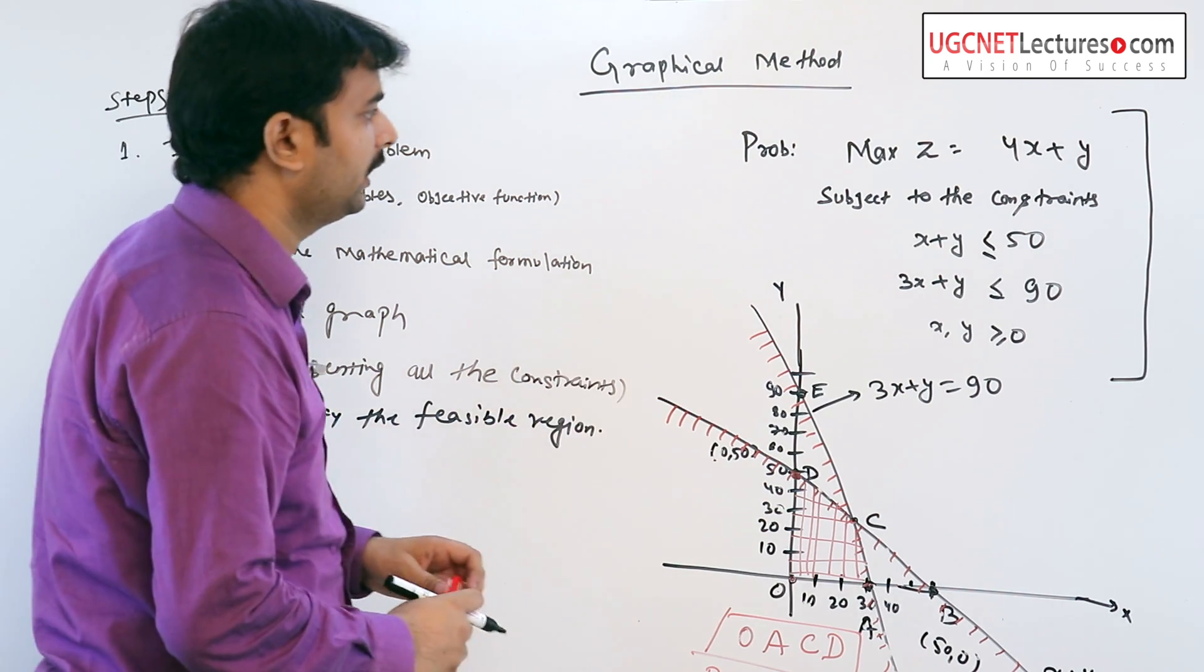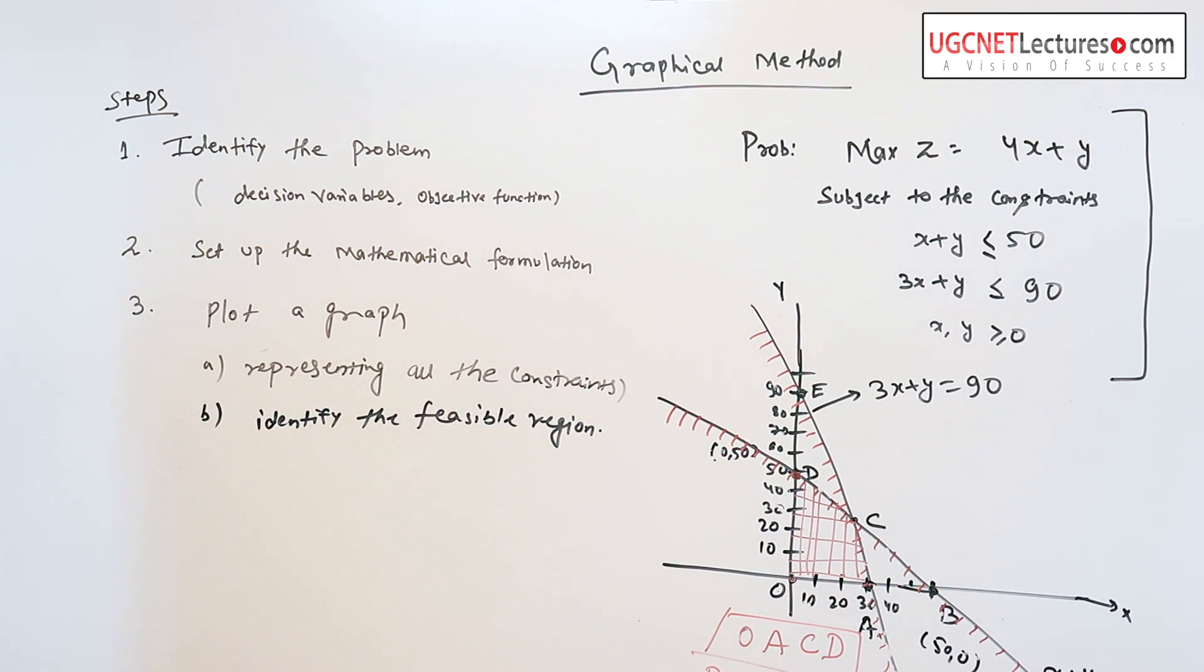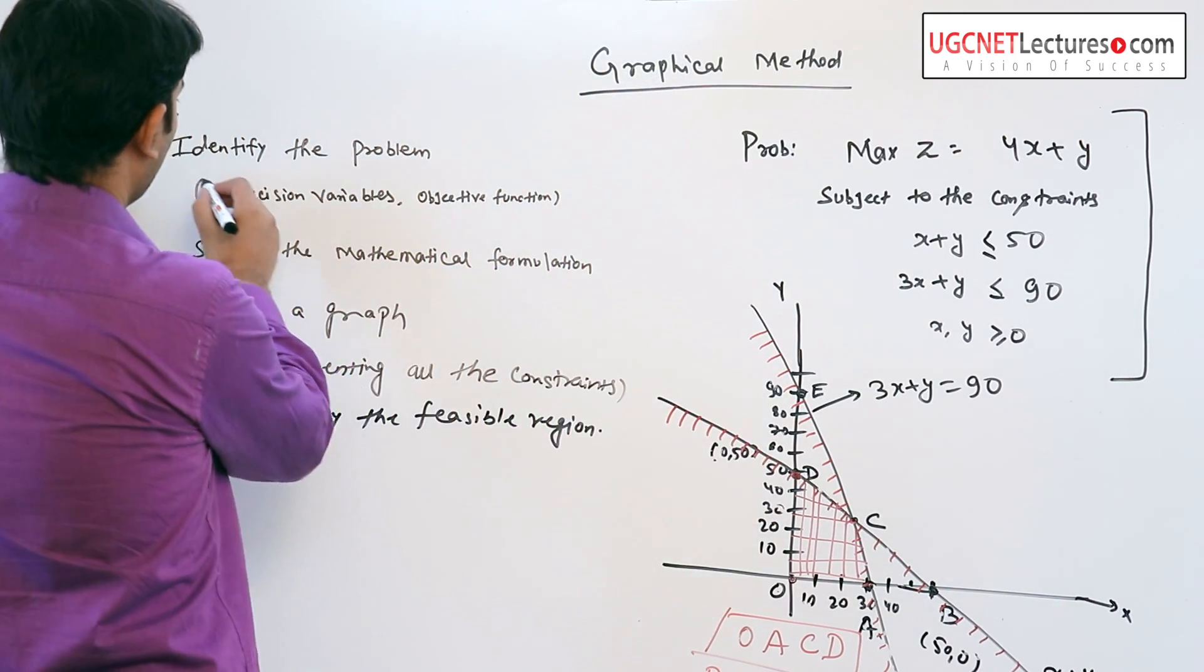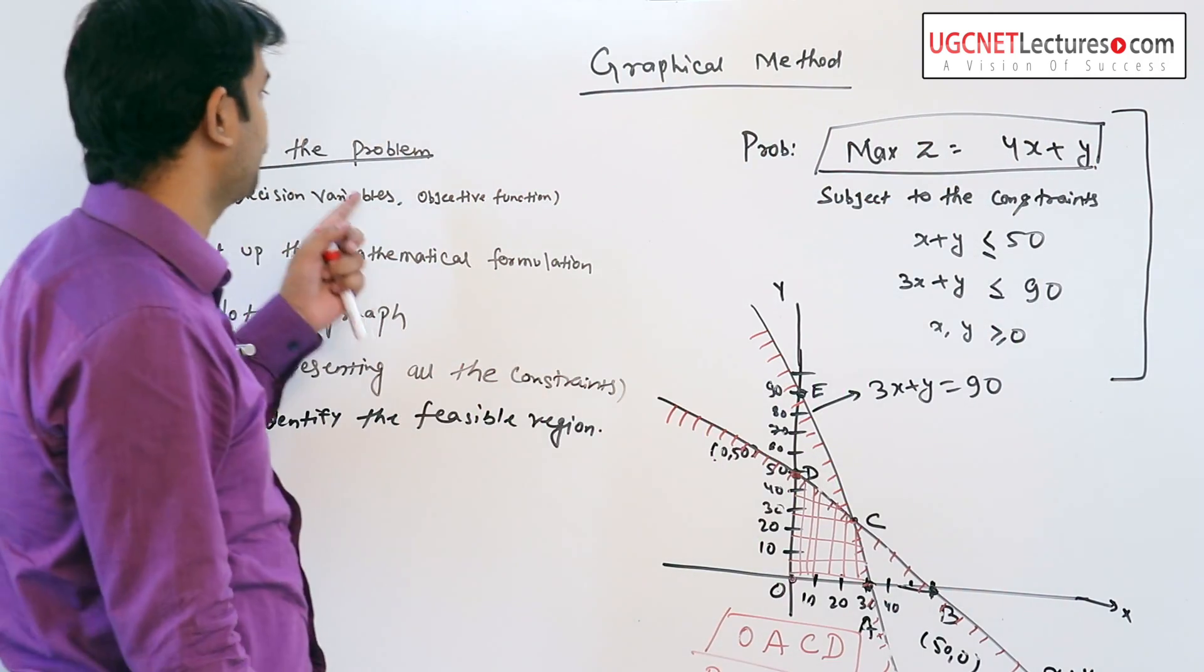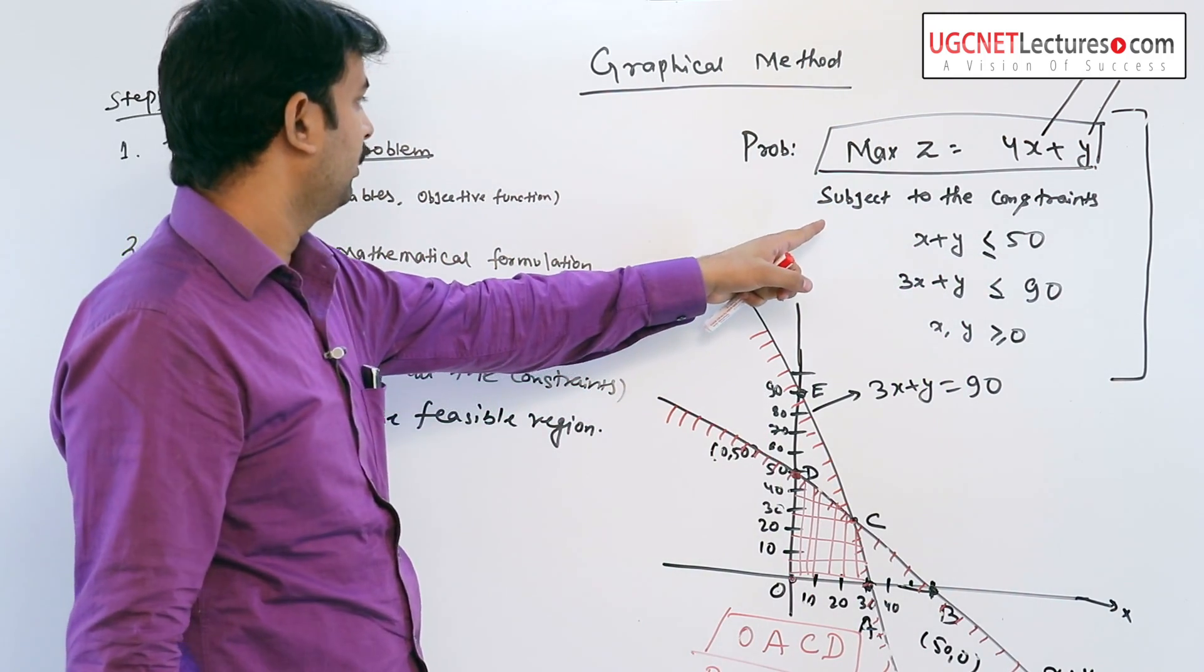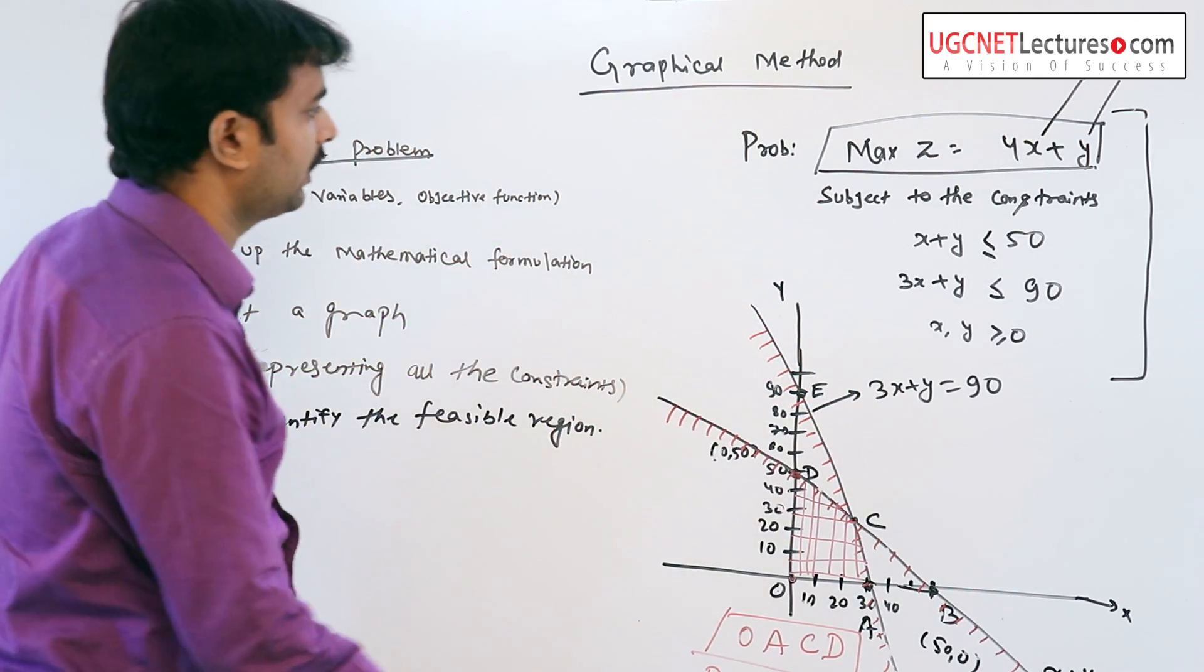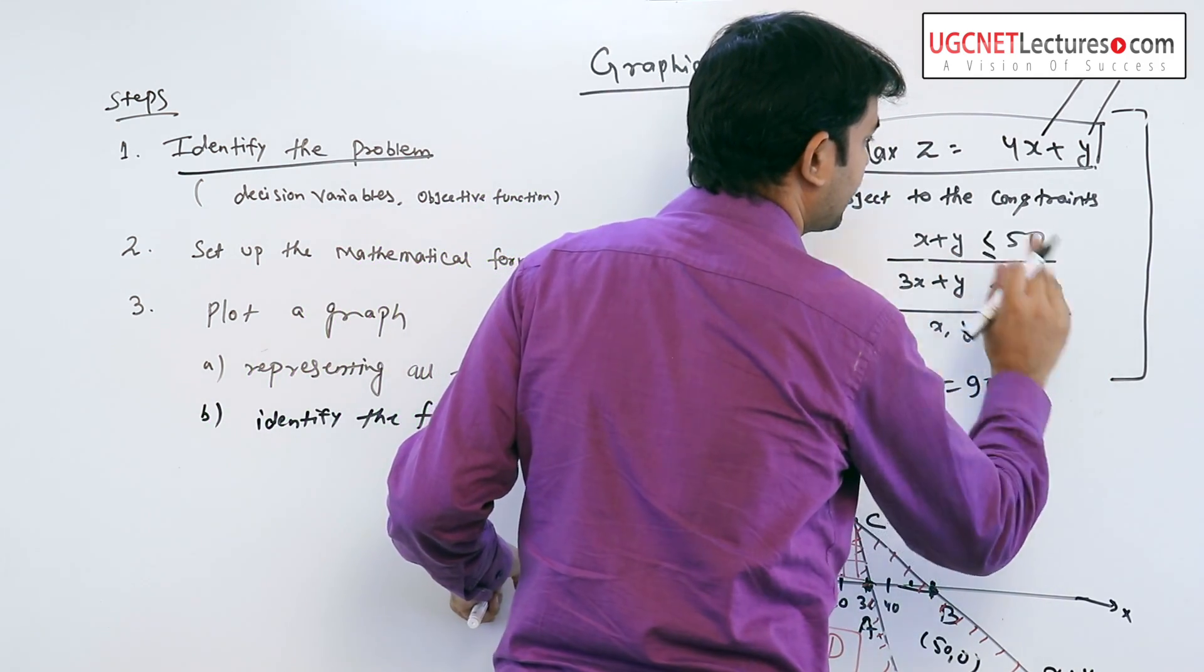So in that particular problem, we know which function we have to maximize - that is my objective function. These are our decision variables and this problem is written in mathematical formulation. Here the constraints are x plus y less than or equal to 50 and 3x plus y less than or equal to 90.